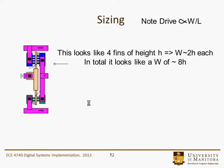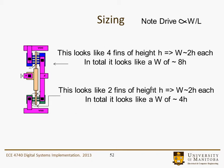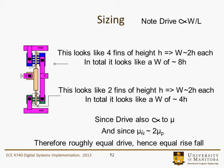Looking at the inverter: as we saw from the current equations, the drive was proportional to W over L. In the pull-up section, there are clearly four fins each of height H, so the width associated with those fins is approximately 2H — the fin on the way up and the fin on the way down. In total it looks like a width of 8H because there are four fins present. In the pull-down section, two fins of height H give a width of 2H each, so in total it looks like 4H. Basically these are out by a factor of 2, which is compensated by the fact that the mobility of the electrons is roughly twice that of the holes — so you'd have roughly equal drive, hence equal rise and fall.